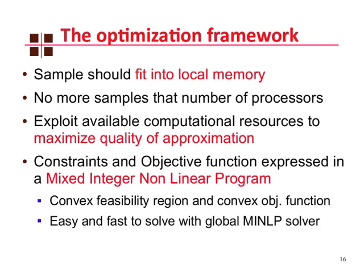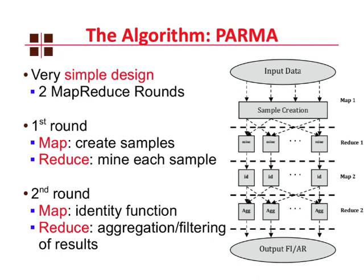We are now ready to introduce our algorithm, PARMA. It has a very simple design and works in two MapReduce rounds. In the first round, we first create the samples in the map function and then mine each sample in parallel in the reduce. In the second round, using the locally frequent itemset collections obtained in the first round, we pass them directly to the reducer using an identity function in the map, and then we aggregate and filter these results in parallel in the reduce function, eventually outputting a global collection of frequent itemsets or association rules.